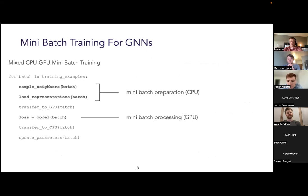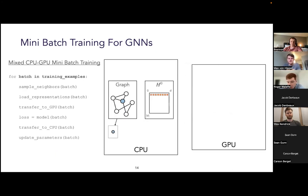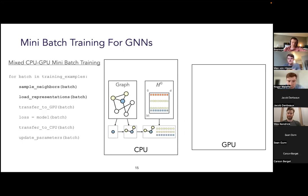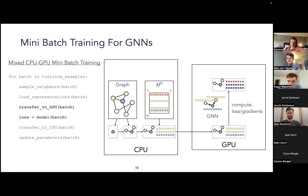Given that storage overhead can exceed GPU memory, the common training process for large GNNs is mixed CPU-GPU mini-batch training. The graph data and base vector representations are stored in CPU memory, and mini-batches are prepared on the CPU before being sent to the GPU. The first step is to sample batches of training examples — either subsets of nodes or edges. Then we sample neighbors for all nodes in the batch for the GNN neighborhood aggregation, load the base vector representations for all participating nodes, and send that information from CPU to GPU memory.